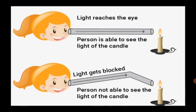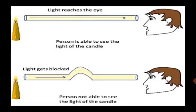Then bend the tube and look at the candle again. What do you see? Light reaches the eyes if the tube is straight. The person is able to see the light of the candle. If the tube is bent, the light gets blocked. Persons are not able to see the light of the candle. So we infer that light travels in a straight line.